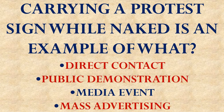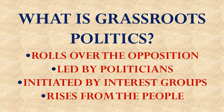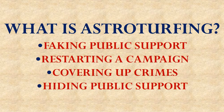Outside lobbying tries to directly influence public opinion, and through that indirectly influence the activities of elected officials. Carrying a protest sign while naked is clearly a media event — the reason protesters are naked is to attract media attention and get their signs on TV. Real grassroots politics rises up from the people: common everyday voters get upset about something and mobilize themselves to do something about it. Astroturfing is faking public support — not hiding it, not covering up crimes, but fabricating the appearance of genuine public support.